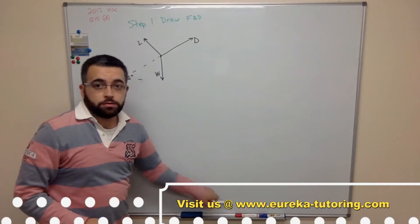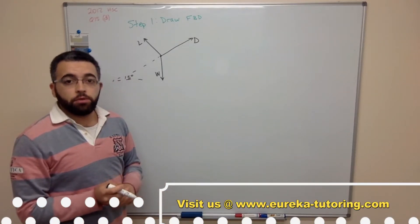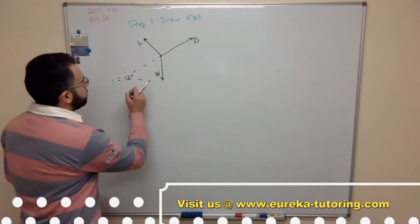Now it does descend at a 15 degree angle so I'll just extend that and make this 15 degrees. So we've got our free body diagram. Now the next thing to do is we need to apply some of the drag forces in both the x and y direction. So step two.